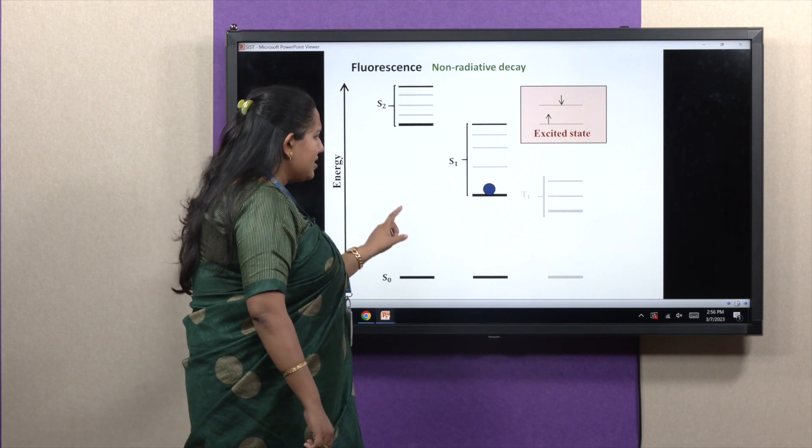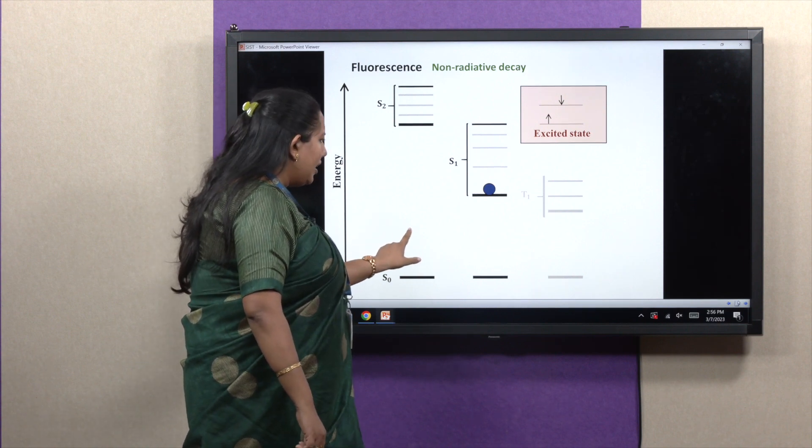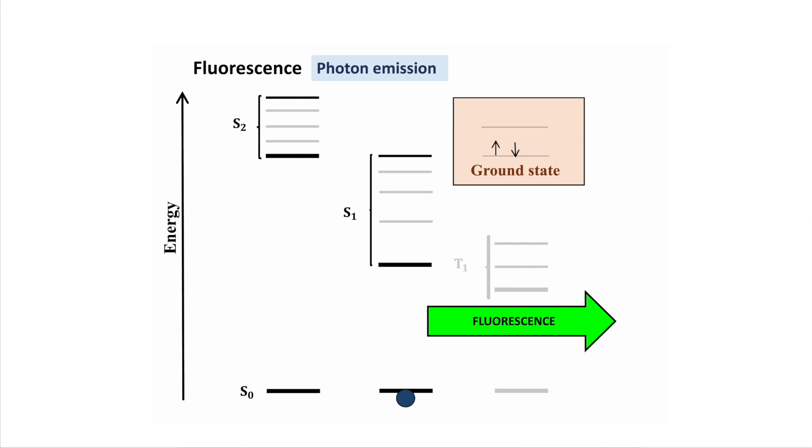From this first excited state, if molecules come back to ground state with radiative pathway, then this phenomenon is termed as fluorescence. This is a prompt emission process.